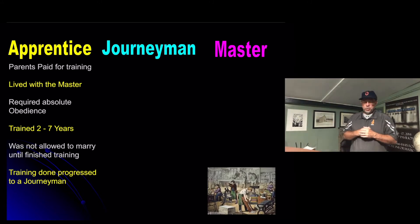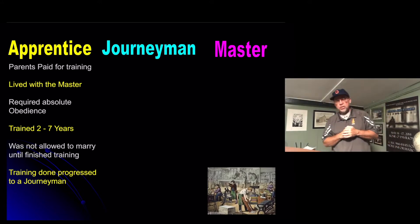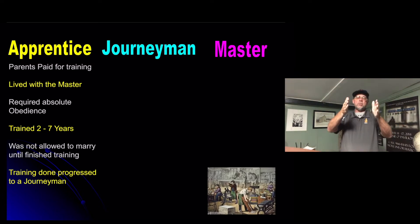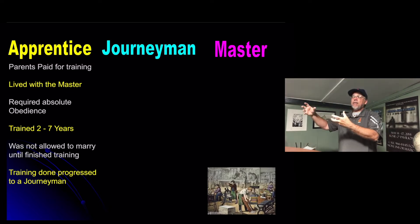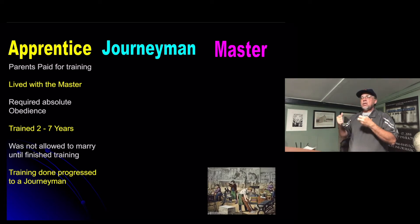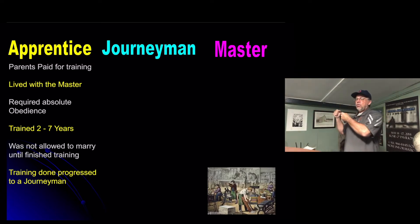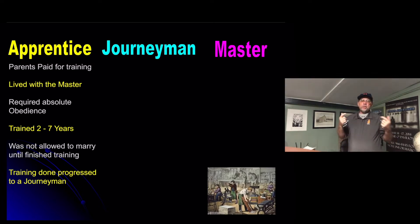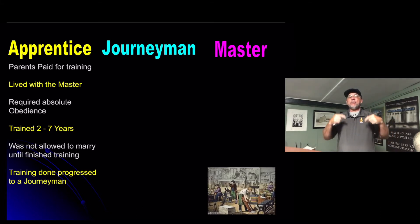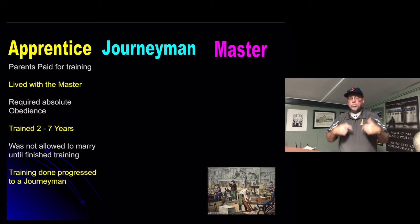You weren't allowed to marry until you finished training. The reason is they wanted you to focus on your training and education. When that was accomplished, then you could have the cares of this world placed upon you — taking care of your own needs, a spouse, and eventually children — because those obligations take away from your development and training. Once your training was done and you could repeat everything the master taught you skill-wise with your hands, you would become a journeyman.